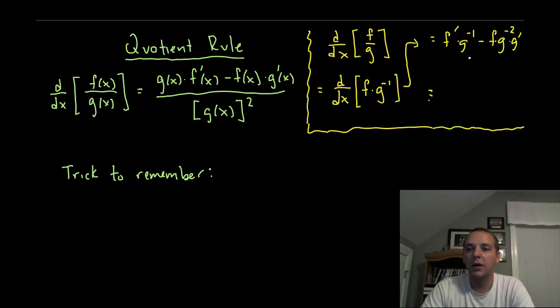From there it's just a matter of cleaning it up a little bit. I'm going to forego the algebra, but you can see where these elements are coming from. The g squared would be in the denominator because of its negative exponent. You would get a common denominator of g squared.